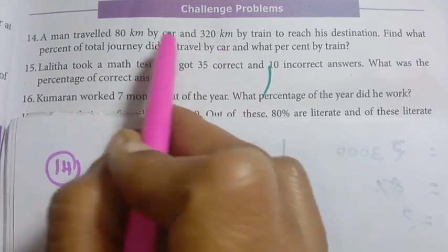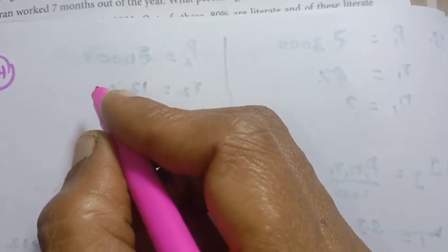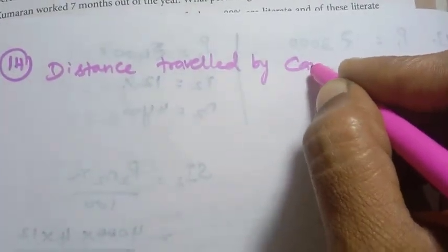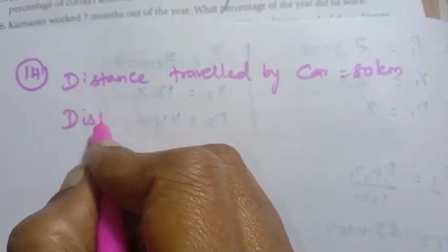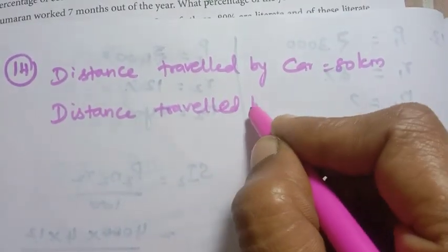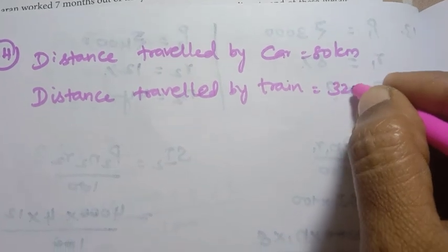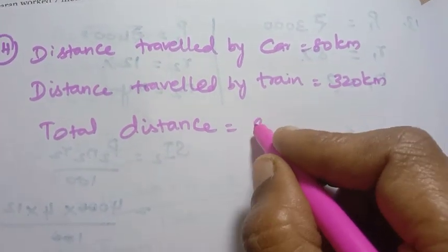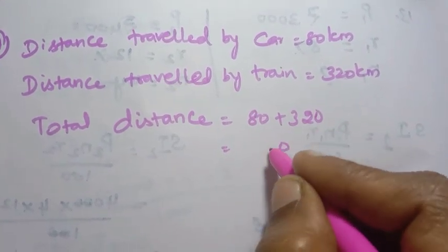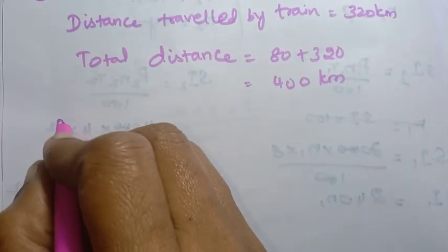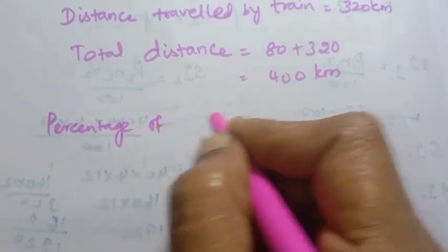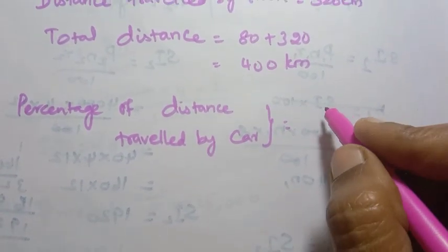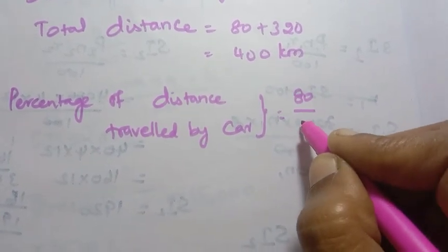If we add the total journey distances, we will know the total journey. Distance traveled by car: 80 km. Distance traveled by train: 320 km. So total distance = 80 plus 320 = 400 km. Now, percentage of distance traveled by car = 80 by 400 into 100.